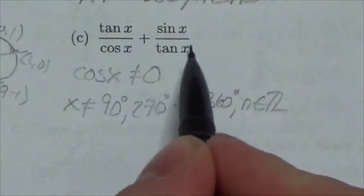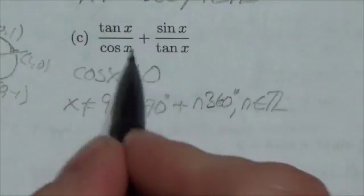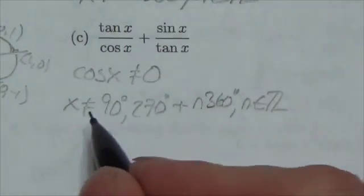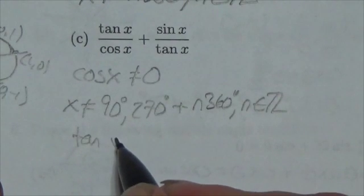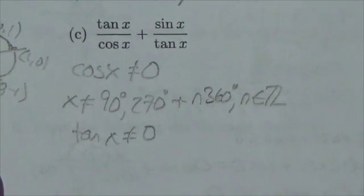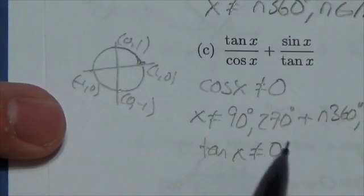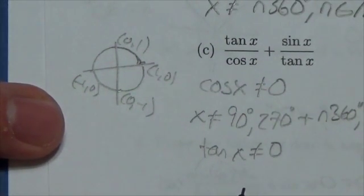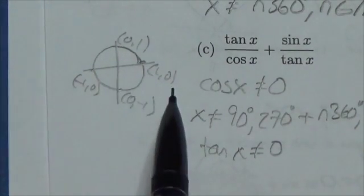But because the tangent down here is in the denominator, now we can't allow tangent to go to zero as well. So tangent of x cannot be allowed to go to zero. And once again, this is one of those quadrantal angle ratios. Let's think as we go around the unit circle.